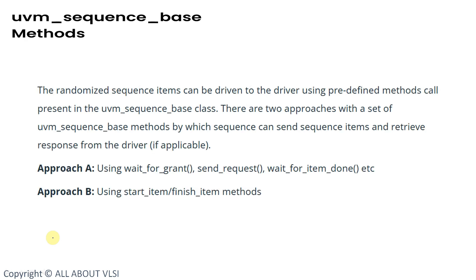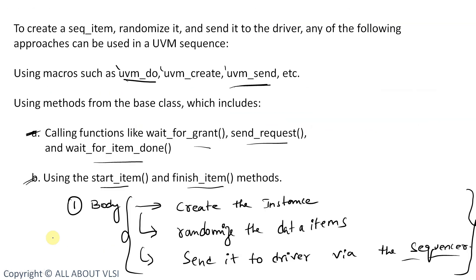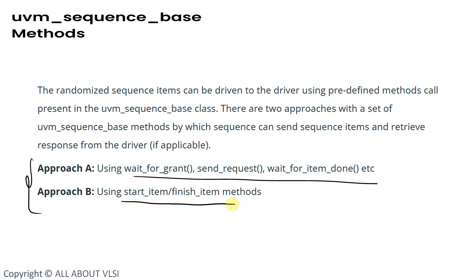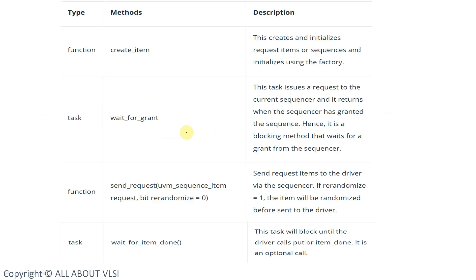The next approach for performing all three operations is using methods. In the methods approach, we have two types: one using a set of predefined methods, or using start_item and finish_item. Randomized sequence items can be driven to the driver using predefined method calls present in the uvm_sequence_base class. The two approaches allow the sequence to send sequence items and retrieve responses from the driver.